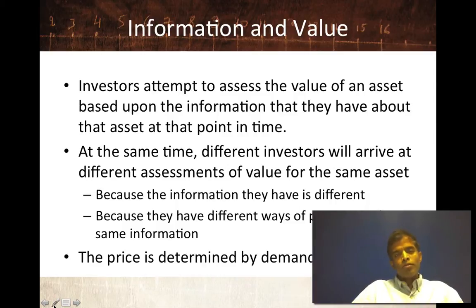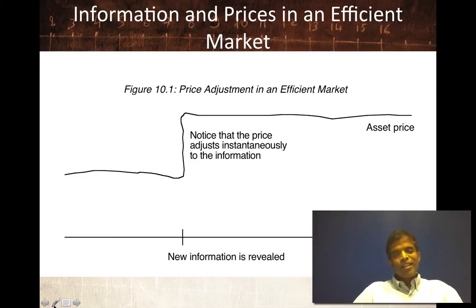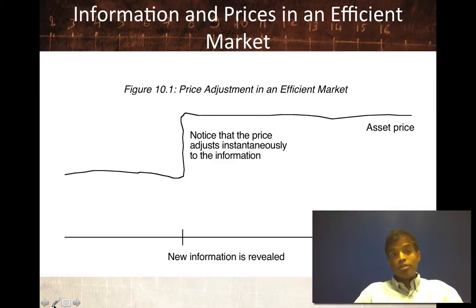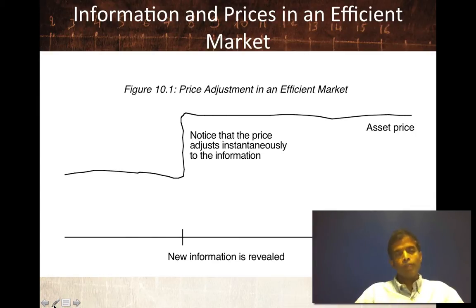Here's how information affects prices in an efficient market. Prices essentially reflect the existing information in the market. New information comes out, and in an efficient market, that new information has about a 50-50 chance of being good news or bad news, because the existing value reflects all of the existing information. If good news comes out — and this is the graph for good news — the price jumps on that good news because the new value based upon the good news is higher than the old value. But it will happen instantaneously at the time the information comes out, and once the information is out, the price will revert back to steady state.